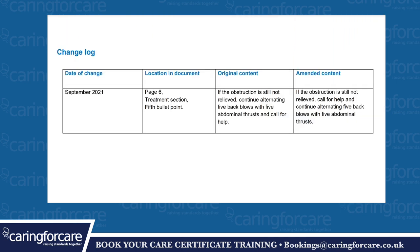Change log, September 2021. Location of the document: page 6, treatment section, 5th bullet point. Original content: if the obstruction is still not relieved, continue alternating 5 back blows with 5 abdominal thrusts and call for help. Amended content: if the obstruction is still not relieved, call for help and continue alternating 5 back blows with 5 abdominal thrusts.